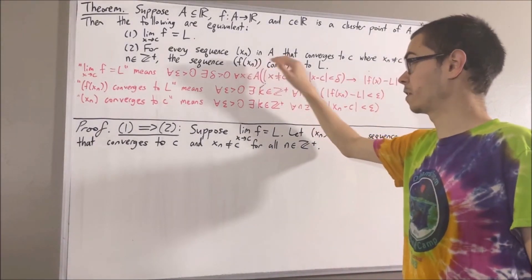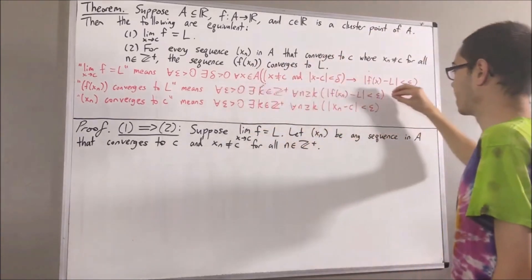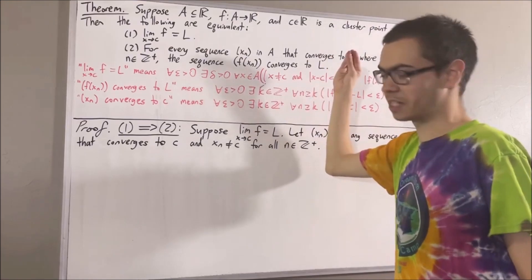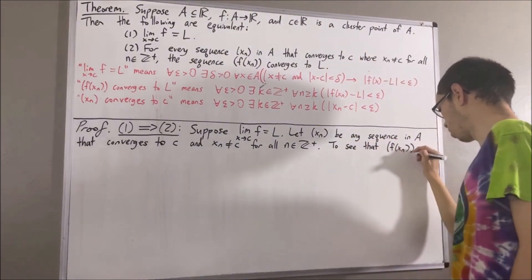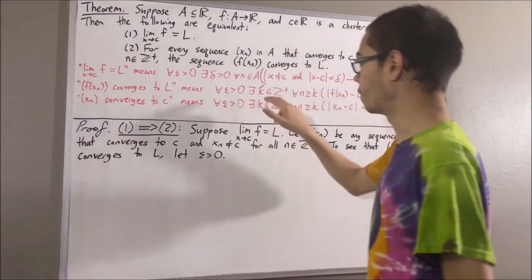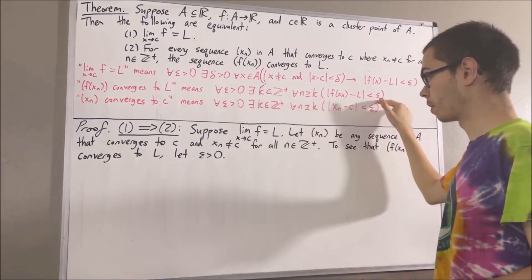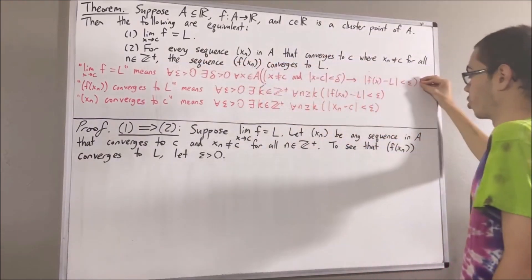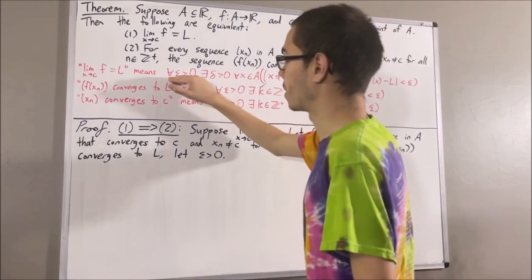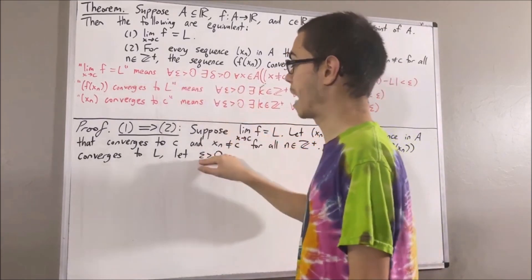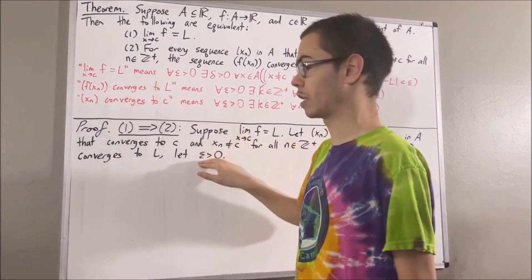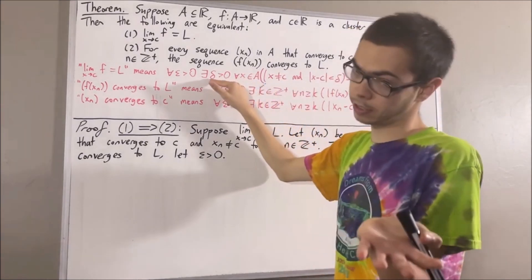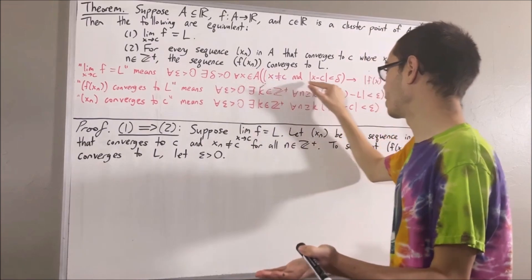The whole goal is to prove that F of Xn converges to L. Since we're trying to prove a statement about every positive real number, let's give ourselves an arbitrary positive real number — we'll call it epsilon. We want to find a positive integer K such that this is true. Since we know the limit as X approaches C of F is equal to L, this first statement is true for every positive real number, so in particular it works for our epsilon. So there is some delta greater than zero such that for all X in A, if this condition holds, then the conclusion holds.